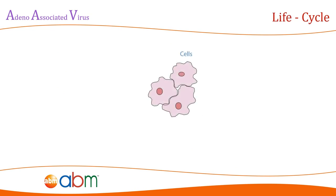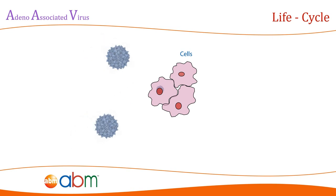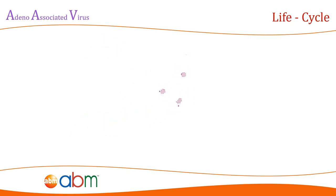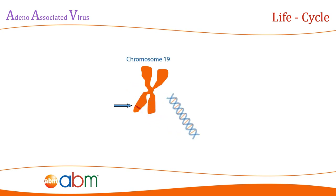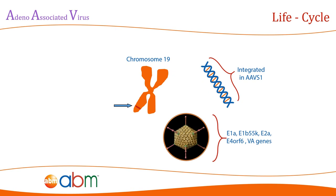When AAV infects a human cell alone, its gene expression program is auto-repressed and latency ensues by integration of the virus into a two-kilobase region of human chromosome 19 called AAV-S1. This allows the virus to stay in a lysogenic or dormant state in the cell or infected tissue until a helper virus such as adenovirus is brought into the infected cells. Once the helper virus is introduced, AAV can enter a lytic cycle and replicate along with the adenovirus.